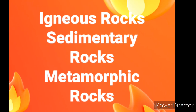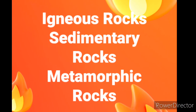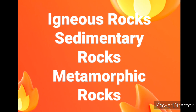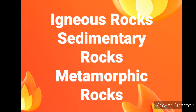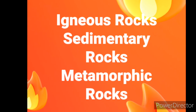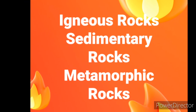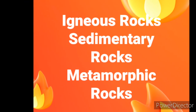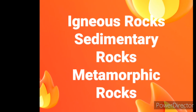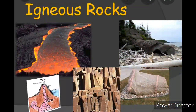Rocks are classified into three based on how they are formed. The three types of rocks are: Number 1, igneous rocks. Number 2, sedimentary rocks. And Number 3, metamorphic rocks. Now we will learn about these three types of rocks one by one.